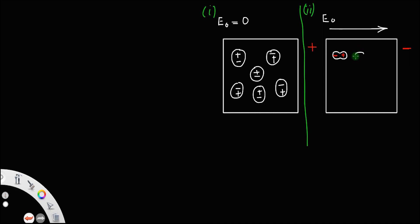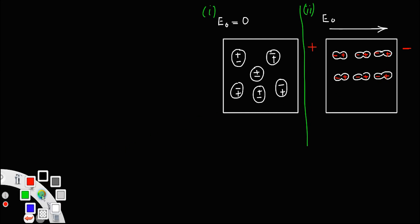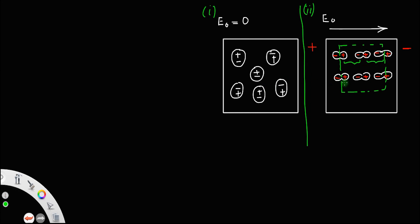Let me draw all the molecules. For convenience, we are taking only 6 molecules. So here it is negative, here it is positive — negative, positive, negative, positive, and so on. If I consider an imaginary rectangular box like this, what you can see inside this box is that this positive charge will get cancelled by this negative charge. Similarly, all interior charges cancel, so there will be no net charge inside this rectangular box.